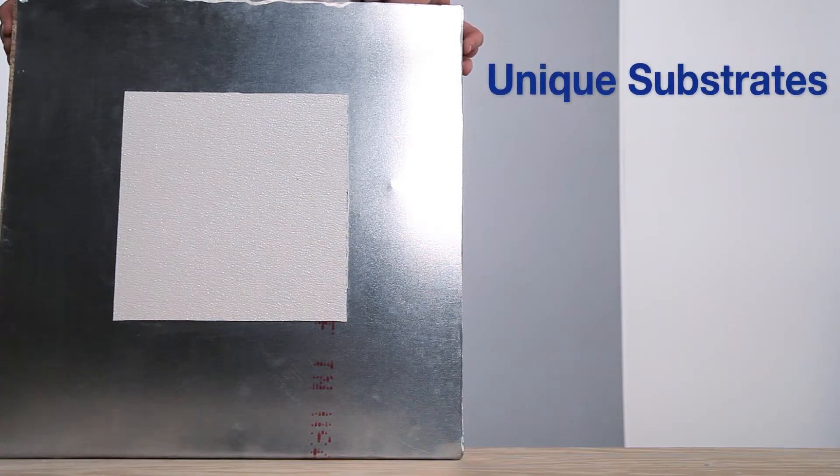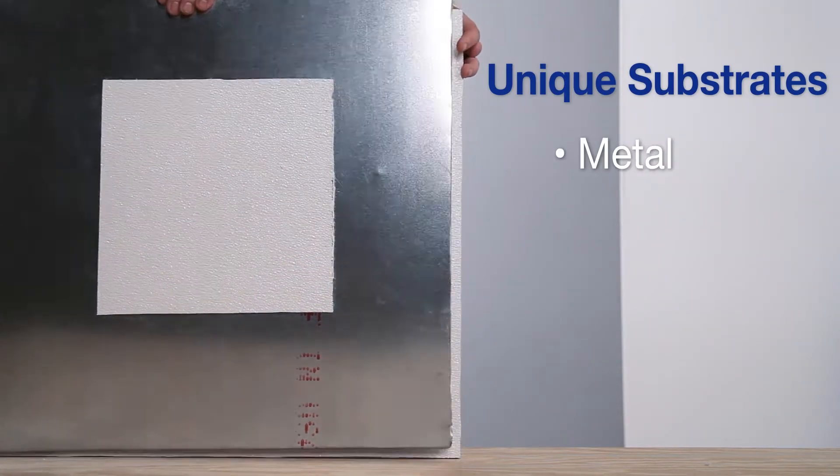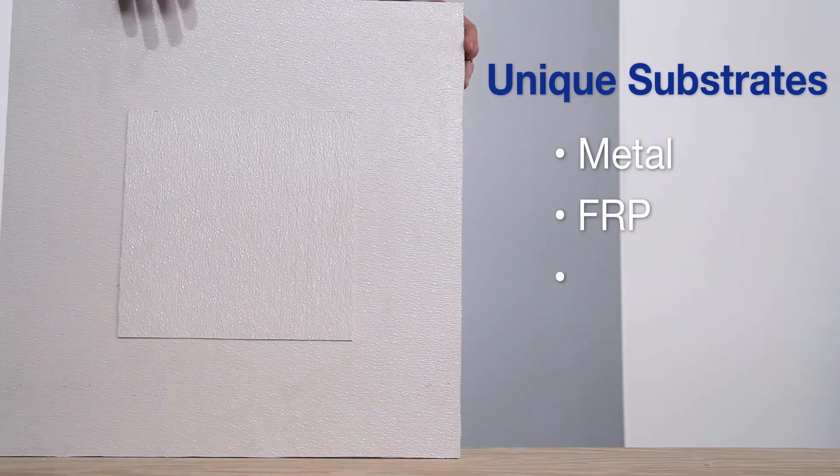Spraylock FRP Adhesive can also be used to install over pre-existing sheet metal, FRP, and ceramic tile.